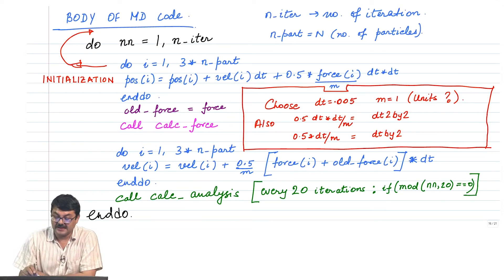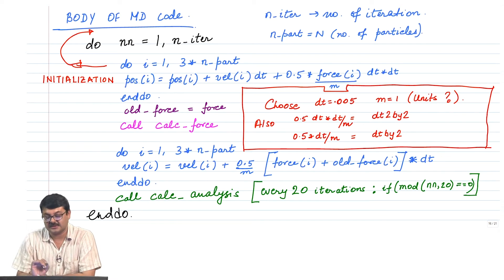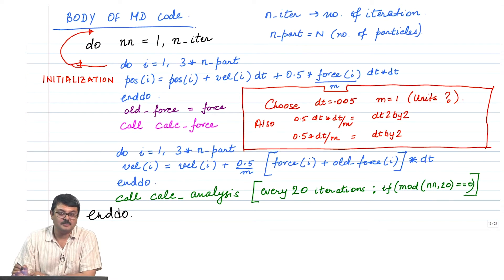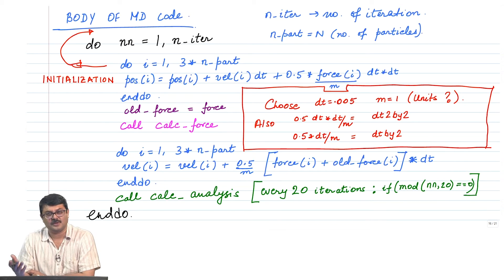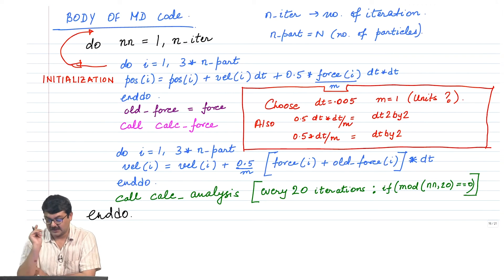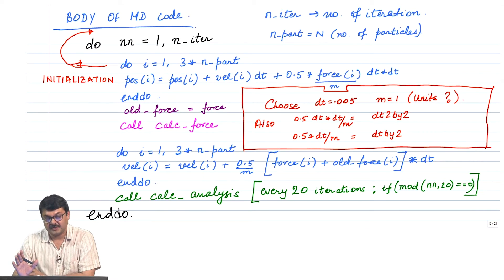First, typically for the Lennard-Jones interaction you can choose dt equal to 0.005, and by convention in most cases one can also take m to be 1. What does dt equal to 0.005 mean — what is the unit of time? We will discuss units later, but typically if you have Lennard-Jones with epsilon equal to 1, dt equal to 0.005 works pretty well.